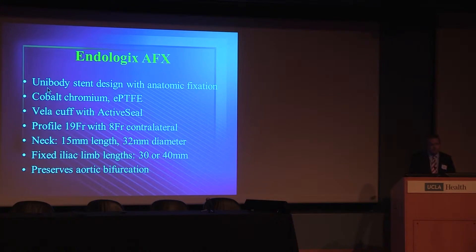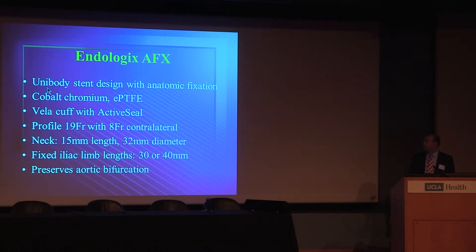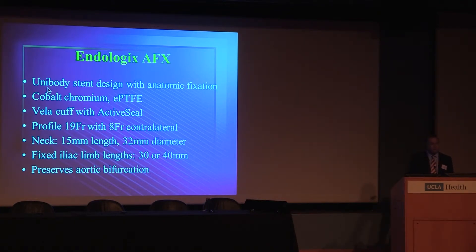Endologix is a very different design — a unibody design that sits on the aortic bifurcation, providing so-called anatomic fixation with columnar support. It has a cobalt chromium stent frame loosely bound to PTFE material. Their proprietary Vela cuff material expands to create an active seal. The profile is a 19 French OD or 17 French ID with a very small 8 French contralateral limb. It can treat 32 mm diameter necks with 15 mm length. Iliac limbs are fixed at either 30 or 40 millimeters, which can be an advantage or detraction. Sitting on the aortic bifurcation also allows for later infrainguinal intervention.